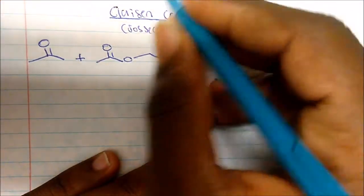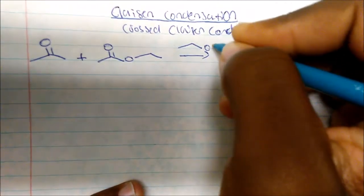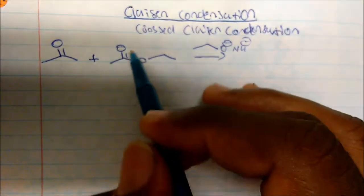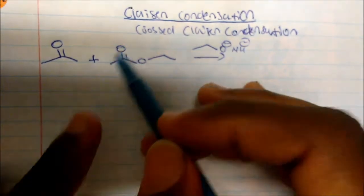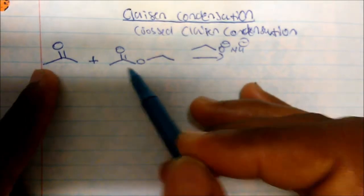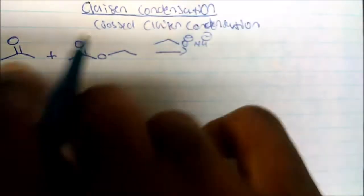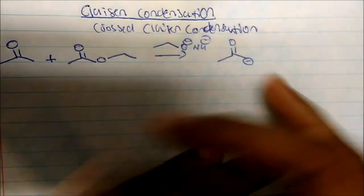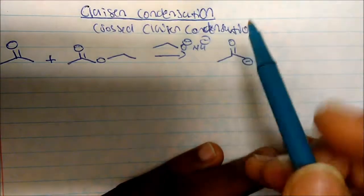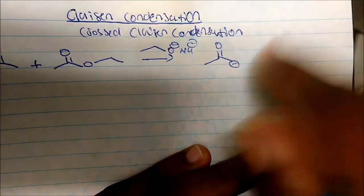So you react a ketone or an aldehyde with some sort of ester, and you add sodium methoxide — a base. Where's my alpha hydrogen? Notice that I have an alpha carbon, but remember the one that's not conjugated, because this would be my leaving group. So I will get deprotonation on the ketone carbonyl, generating a negative charge on the carbon of the ketone.